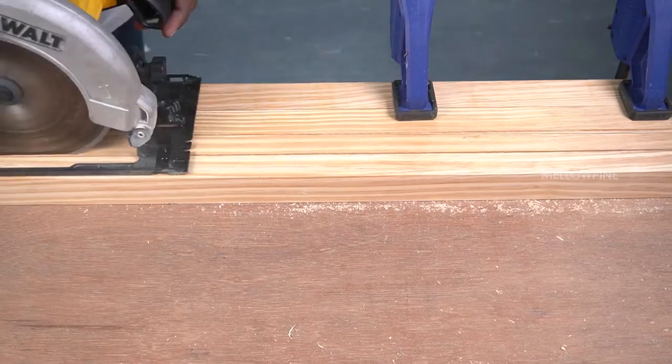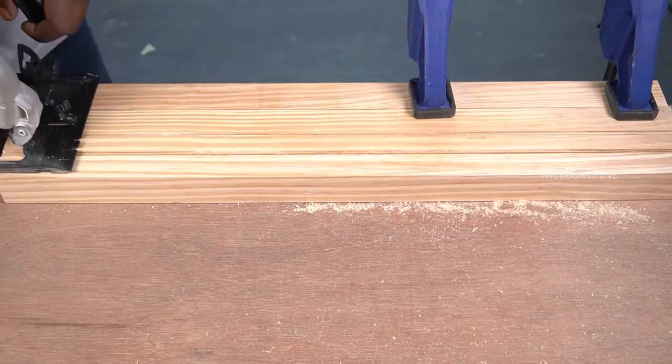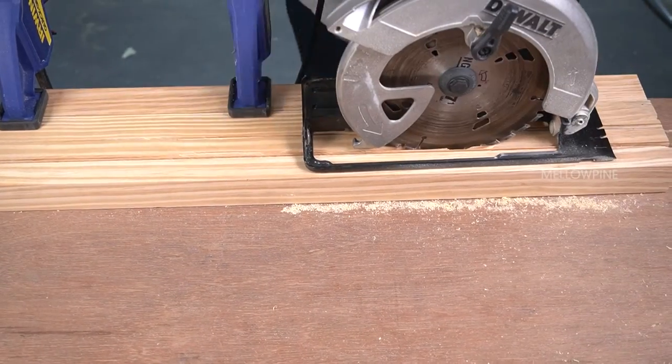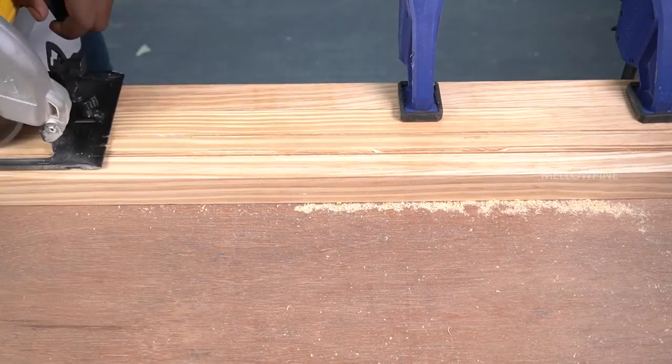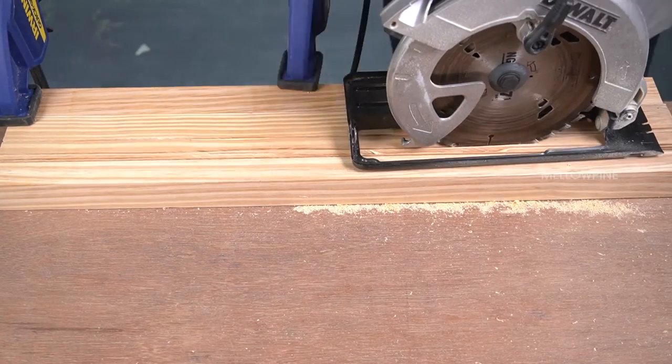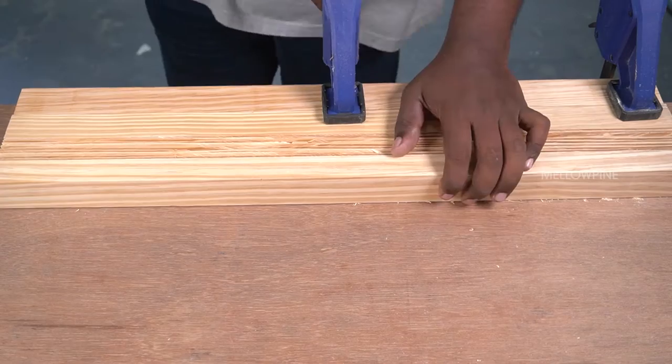Now once you're done with the first cut, readjust the fence and make multiple cuts within the groove boundary. The goal here is to make multiple cuts so as to make it easy to chisel out the groove. The more cuts you make, the easier it becomes to chisel.